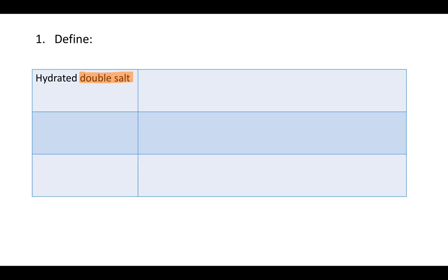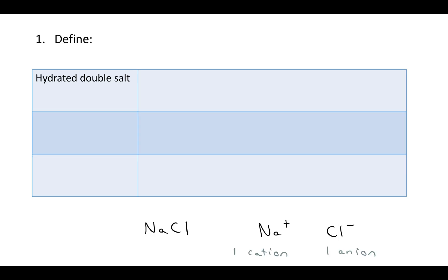Let's discuss what a double salt is by first thinking about what a regular salt is. A normal salt, like table salt, would be NaCl, sodium chloride. That's made of one cation — a positively charged ion — and one anion, a negatively charged ion. So you have one type of cation, sodium, combining with one type of anion, chlorine.